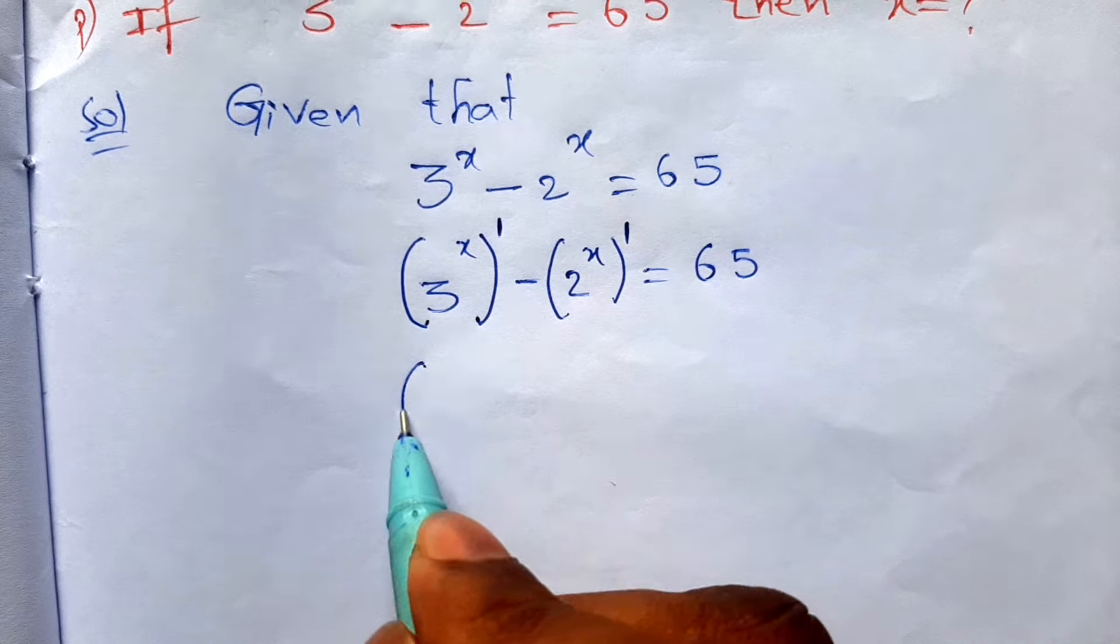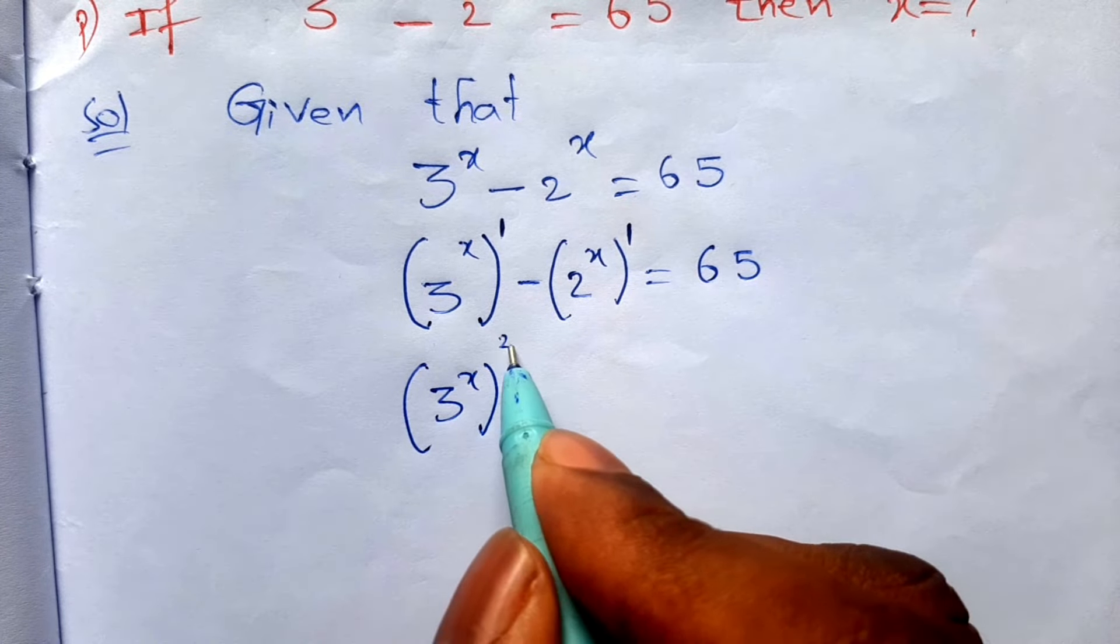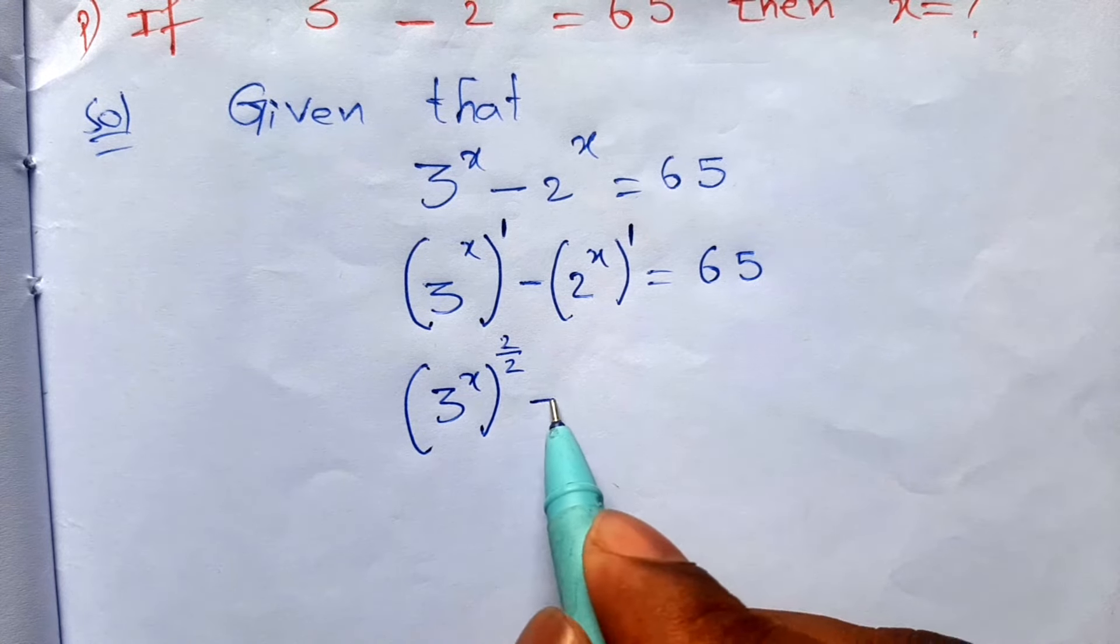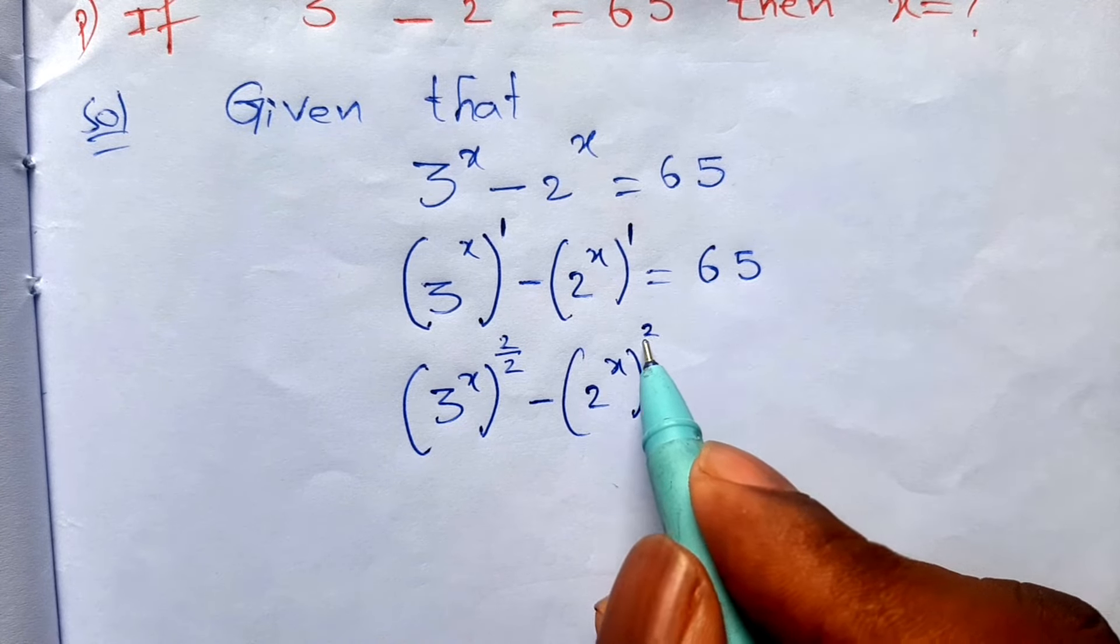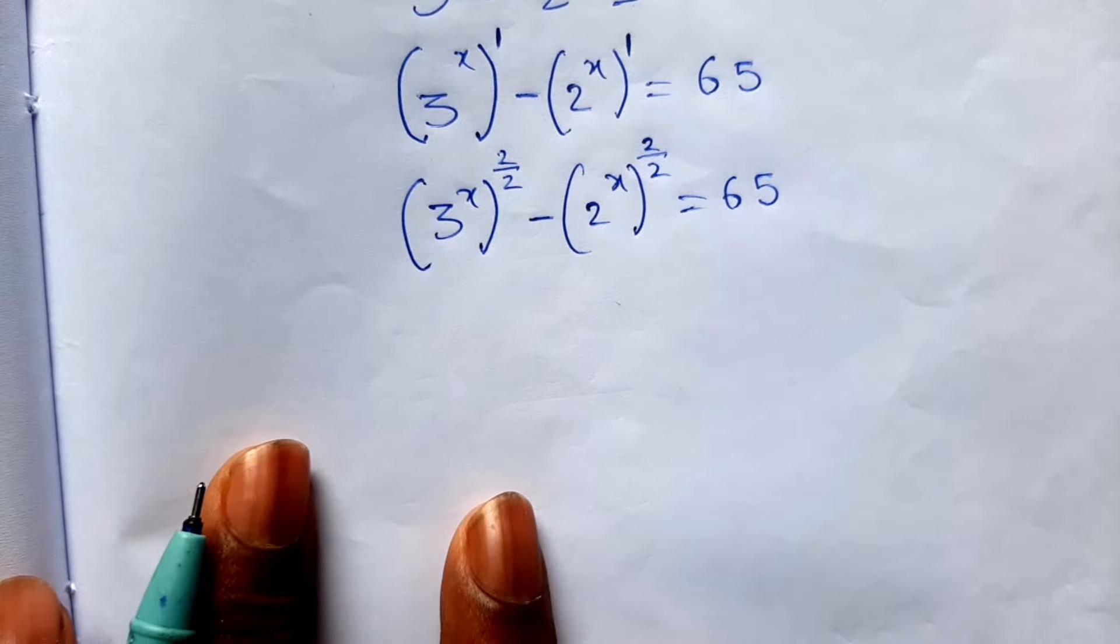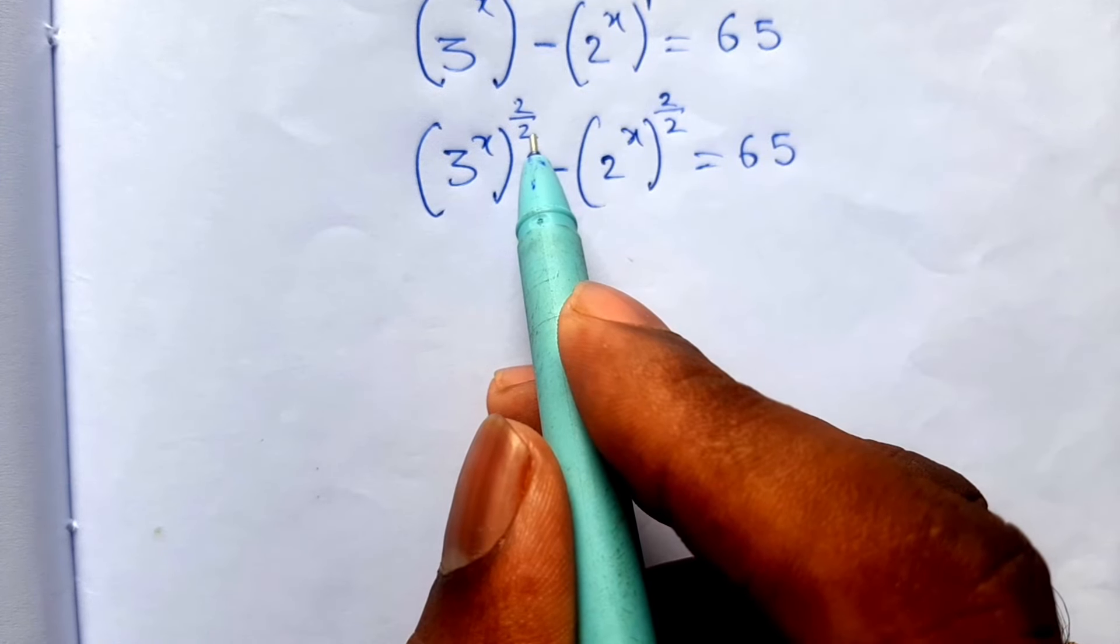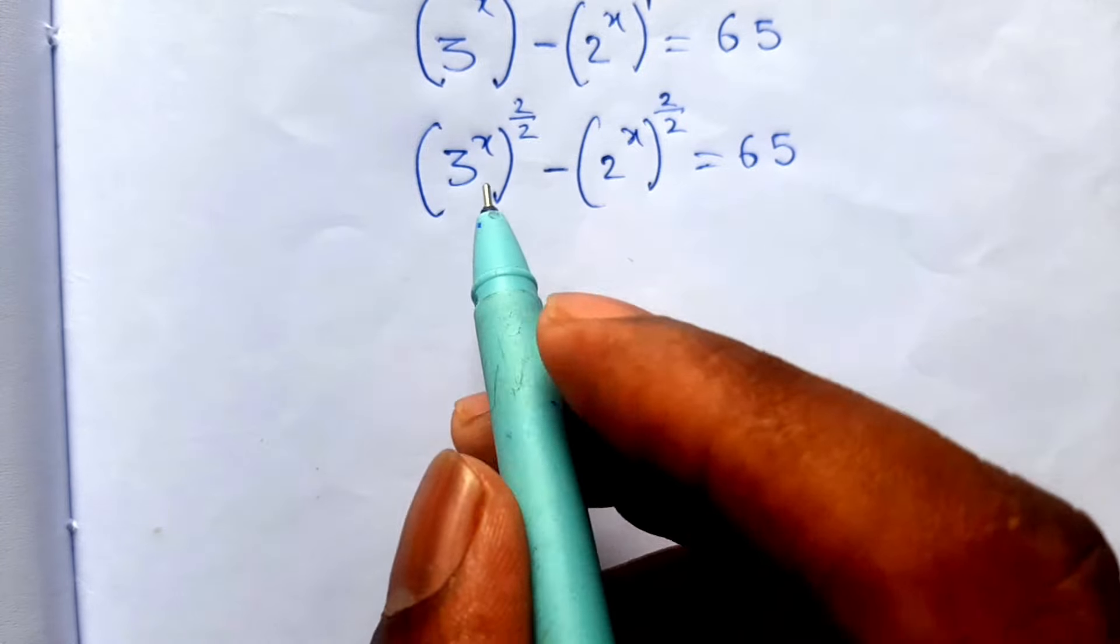This will be 3 to the power x 1, I am writing 2 by 2, 2 by 2 gives value 1, minus 2 to the power x, here also I am writing 1 place 2 by 2, is equal to 65. In the power, denominator value taken inside.